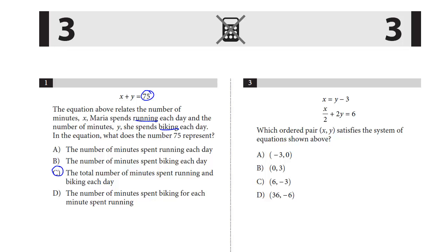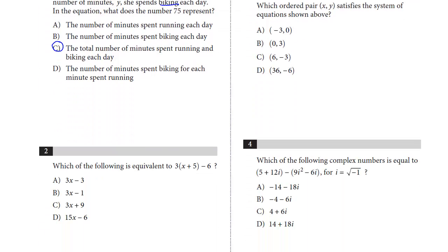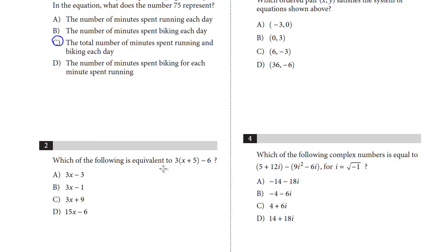Let's take a look at question number two. Which of the following is equivalent to this equation? Again, early on, straightforward question. We're going to distribute the three. We get 3x plus 15 minus 6, and then we combine these terms. 15 minus 6 is 9, and we get 3x plus 9. The answer here is C.